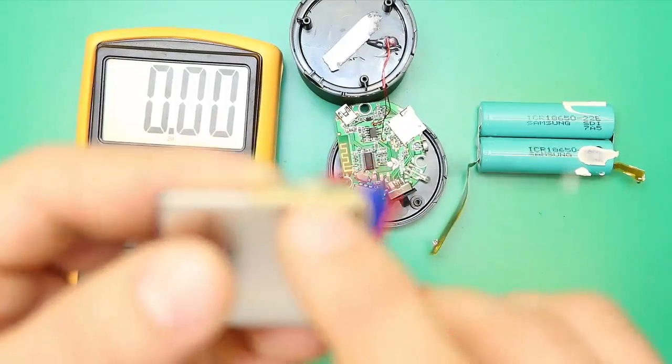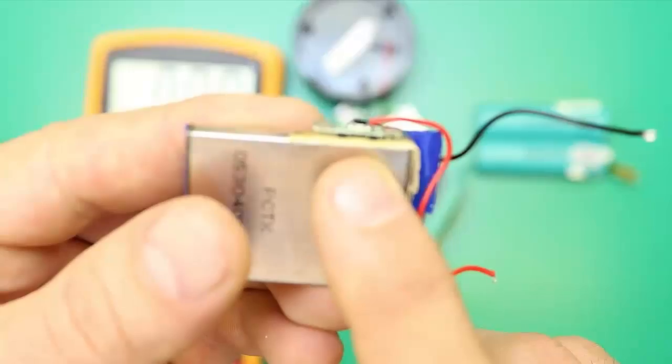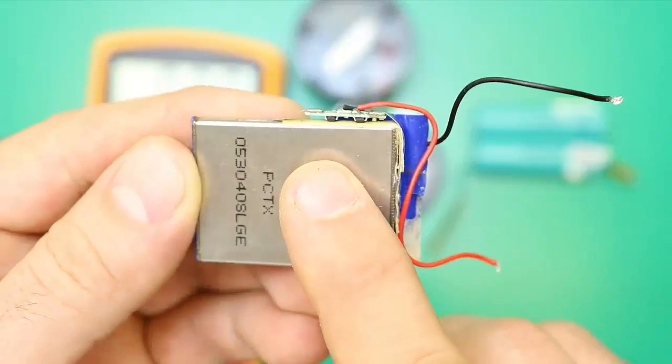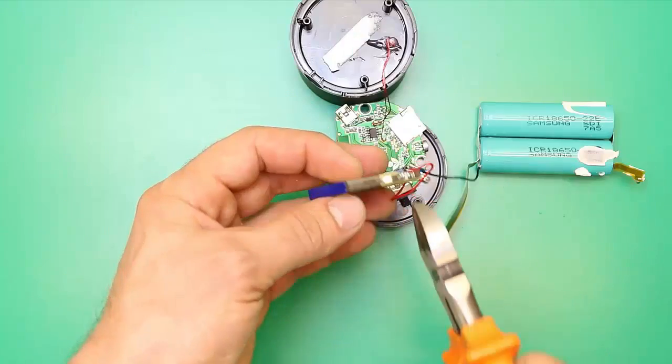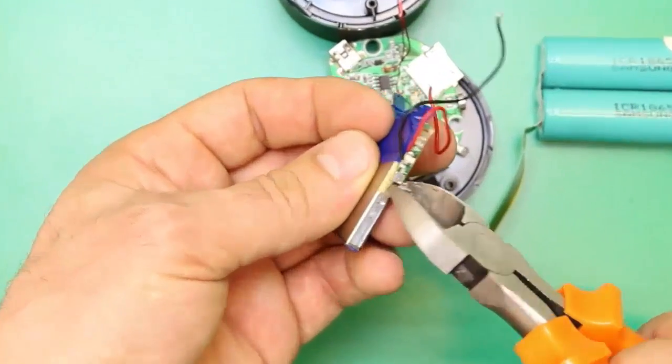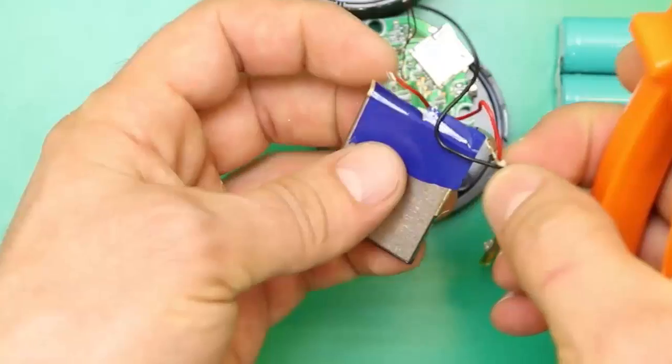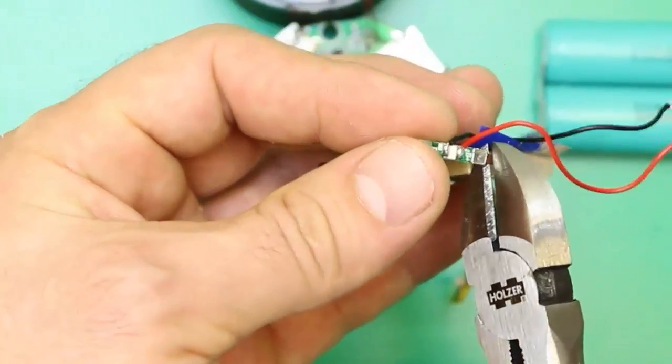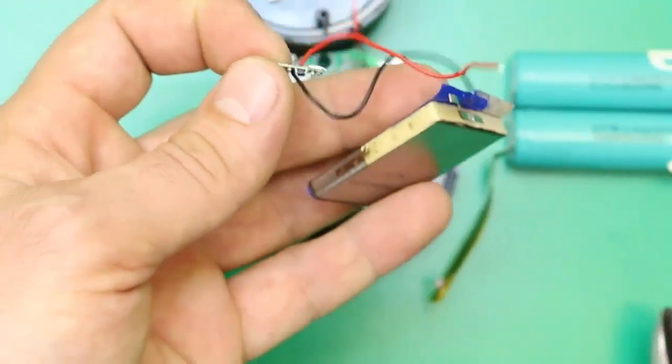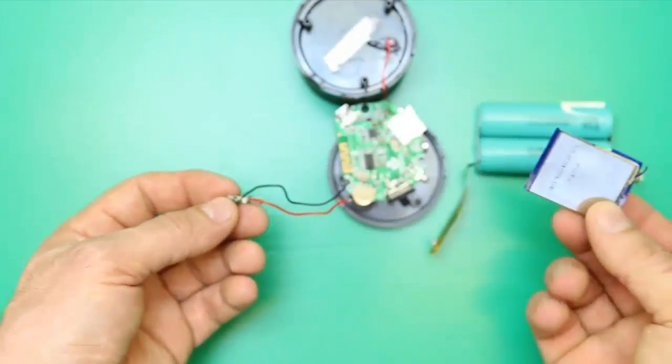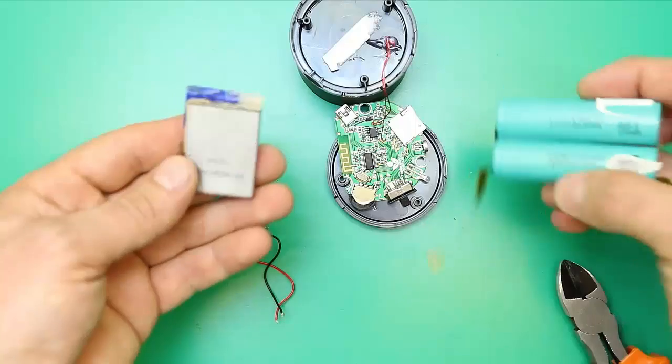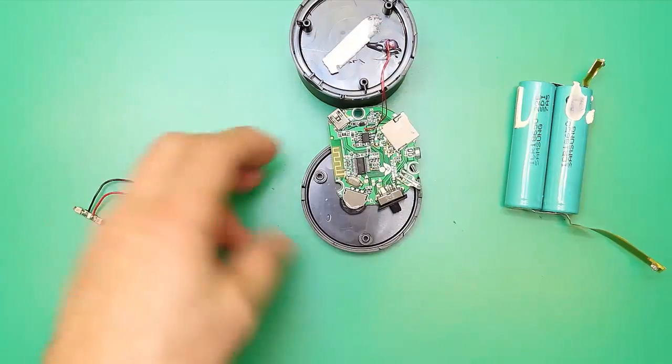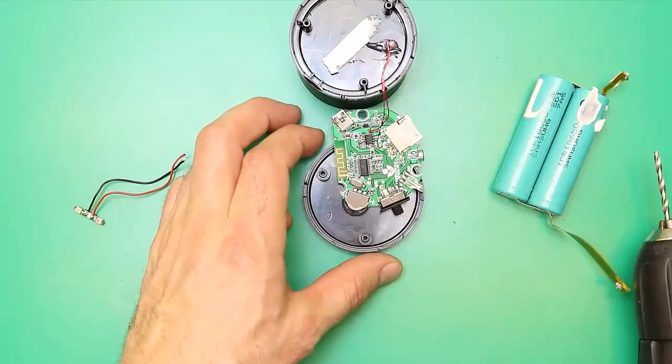Now we're going to unpack the charger protection board from the battery to use it with the other batteries. We'll replace the 520 milliamp battery that lasts three to four hours with these two batteries having 4400 milliamps total and an autonomy of 13 to 14 hours.